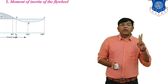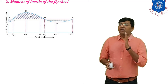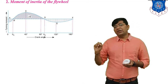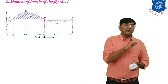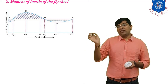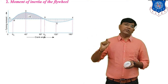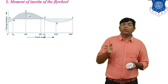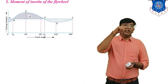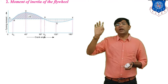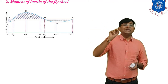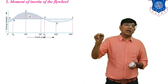Now the second calculation: moment of inertia of the flywheel, capital I. To find I we need to calculate delta E first, because the equation is delta E equals I·omega²·Cs. We have the turning moment diagram as a sine wave and the mean resisting torque as a straight line.